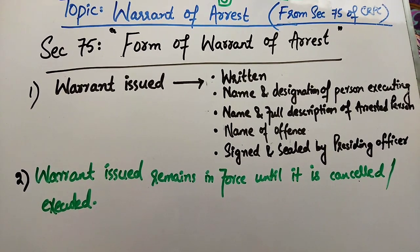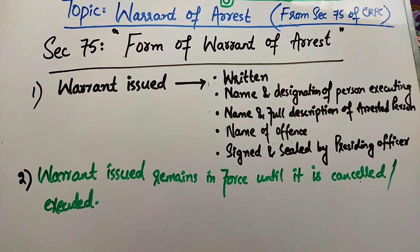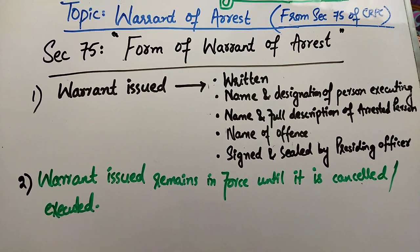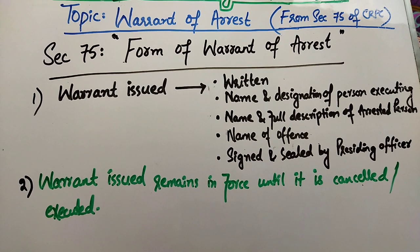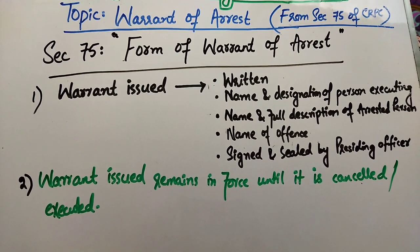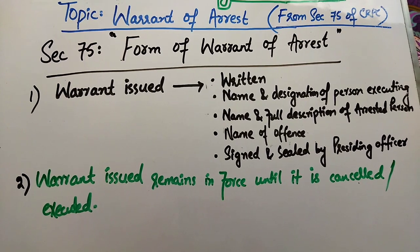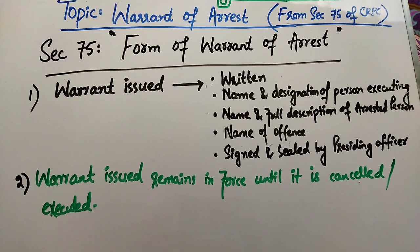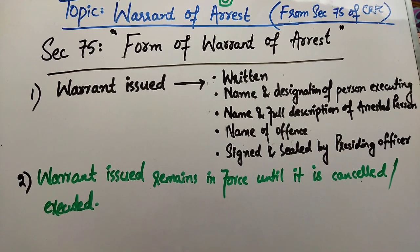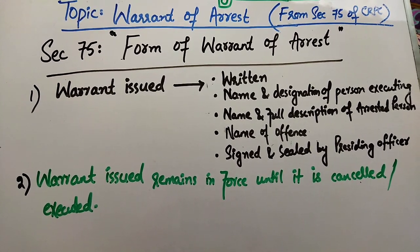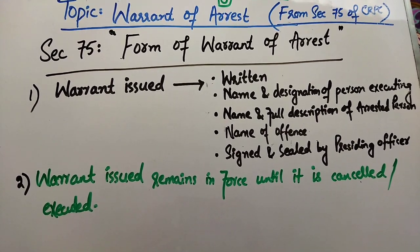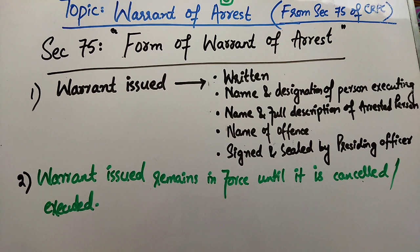Secondly, جو بندہ اس warrant کو execute کر رہا ہے اس کا نام اور designation لکھا ہوگا. پھر جس بندے کو arrest کرنا ہے اس کی full description لکھنی ہوگی. اس کے ساتھ offense کا نام بھی لکھا جائے گا. And all such warrants will be signed and sealed by the presiding officer.